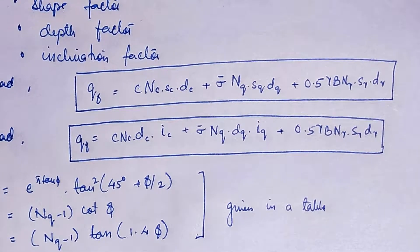You need to remember this formula. Similar to Terzaghi's theory, you multiply by SC DC, SQ DQ, and S gamma D gamma, and for inclined loading DC IC, DQ IQ. These things are generally provided in tables.